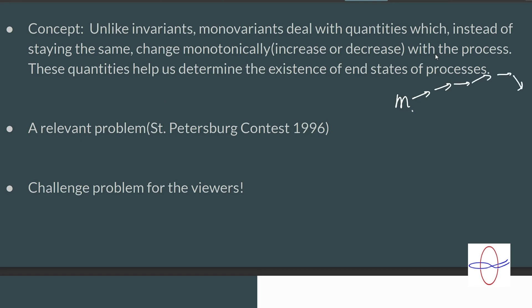Similarly, a monovariant could decrease, stay the same maybe for a few steps and then decrease. The thing is it will never increase. This is what we call a monotonic change. So a monovariant is a quantity that behaves like this with respect to the process.